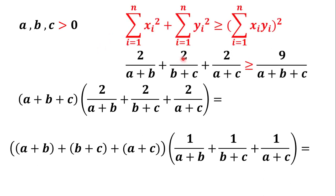The Cauchy-Schwarz inequality tells us that for any x₁, x₂, up to xₙ and for any y₁, y₂, up to yₙ, we can write: the sigma of xᵢ squared times the sigma of yᵢ squared is greater than or equal to the sigma of the product xᵢyᵢ, all to the power of 2, where i goes from 1 to n.